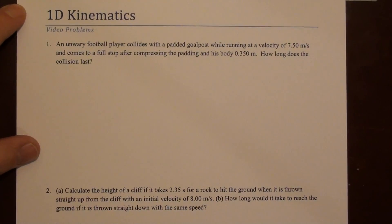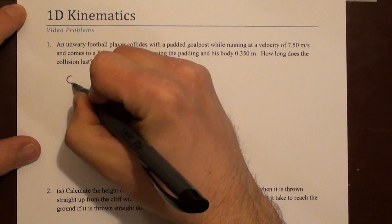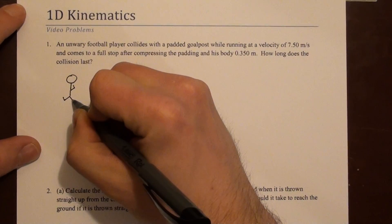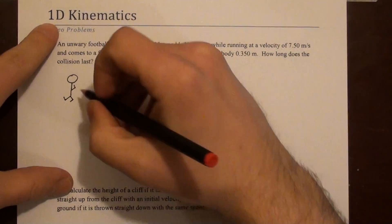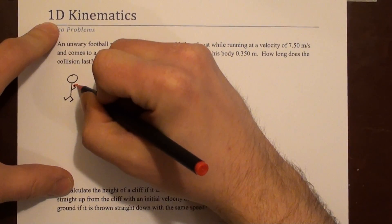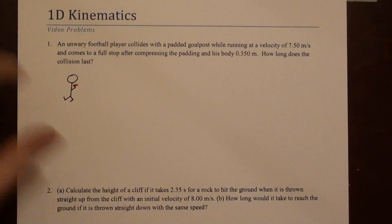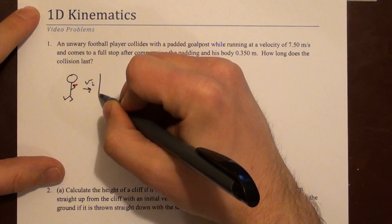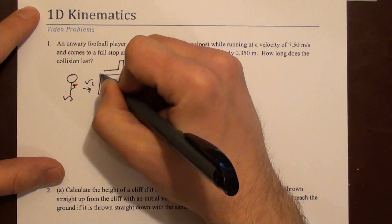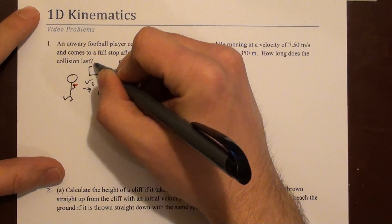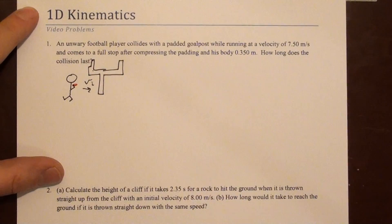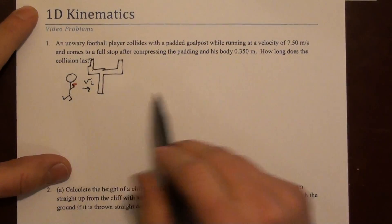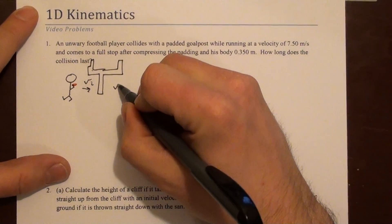So let's draw a little picture just to get an idea of what's going on. Here is our football player. You can tell that he's running because his knees are bent and maybe he's holding a football. And he has some initial velocity and he's heading toward a goal post. He's heading toward some goal post with some initial velocity, 7.5 meters per second, and he's going to stop.